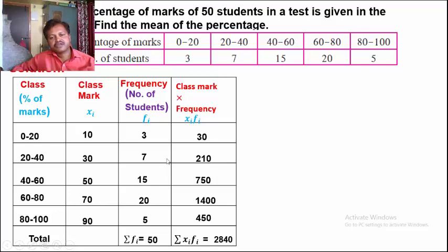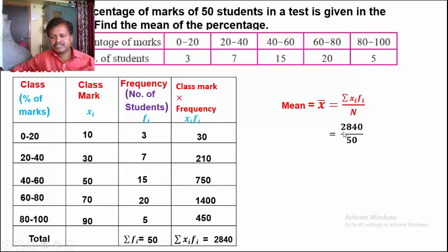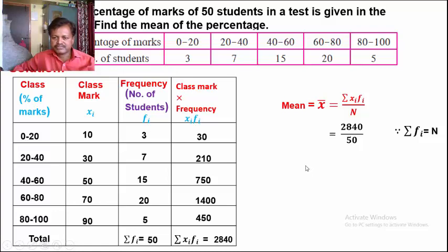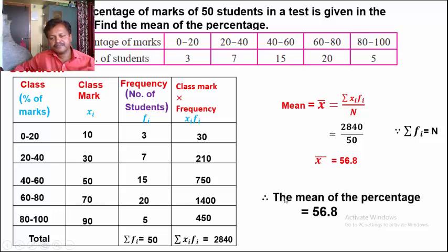Now calculate the mean: X-bar = Sigma Xi Fi upon n = 2840 upon 50 (where n = Sigma Fi = 50). So X-bar = 56.8. The mean of percentage of marks is 56.8.